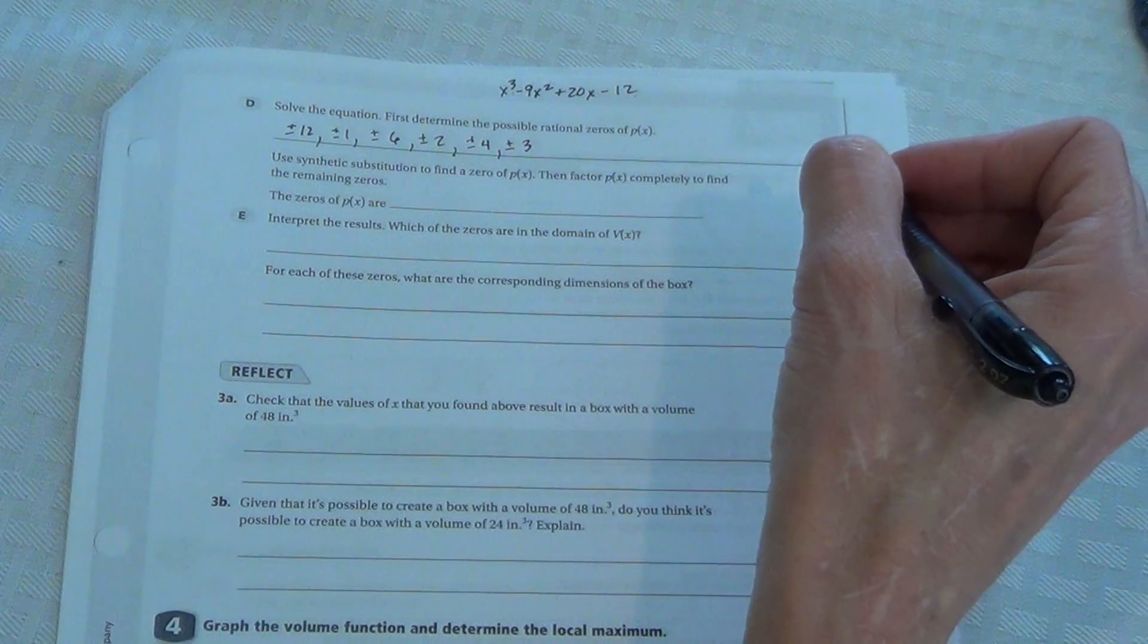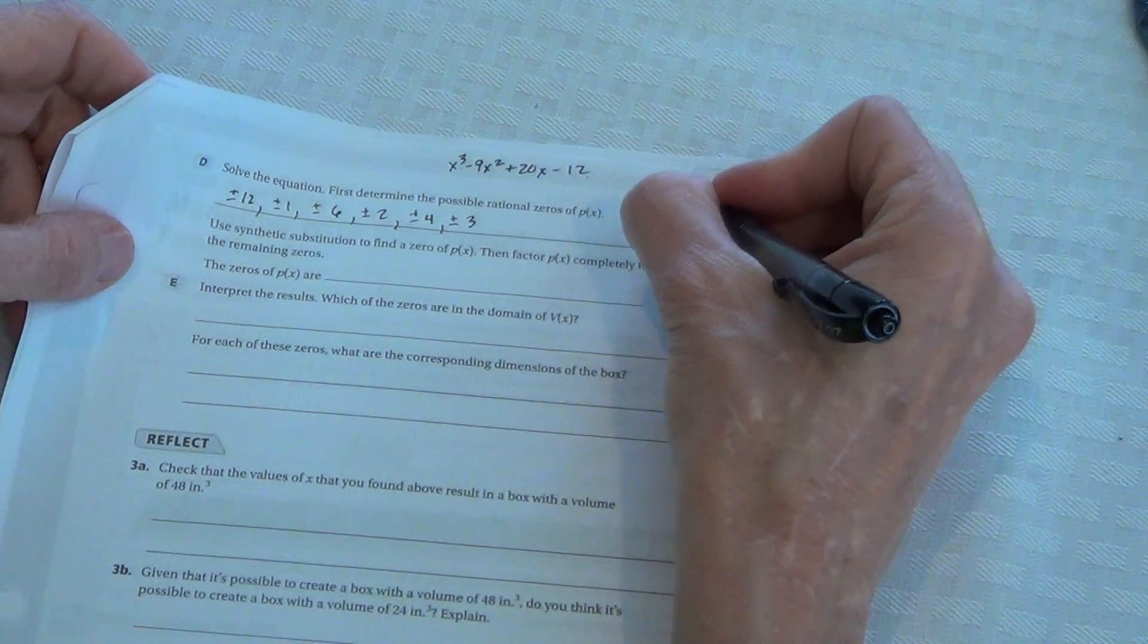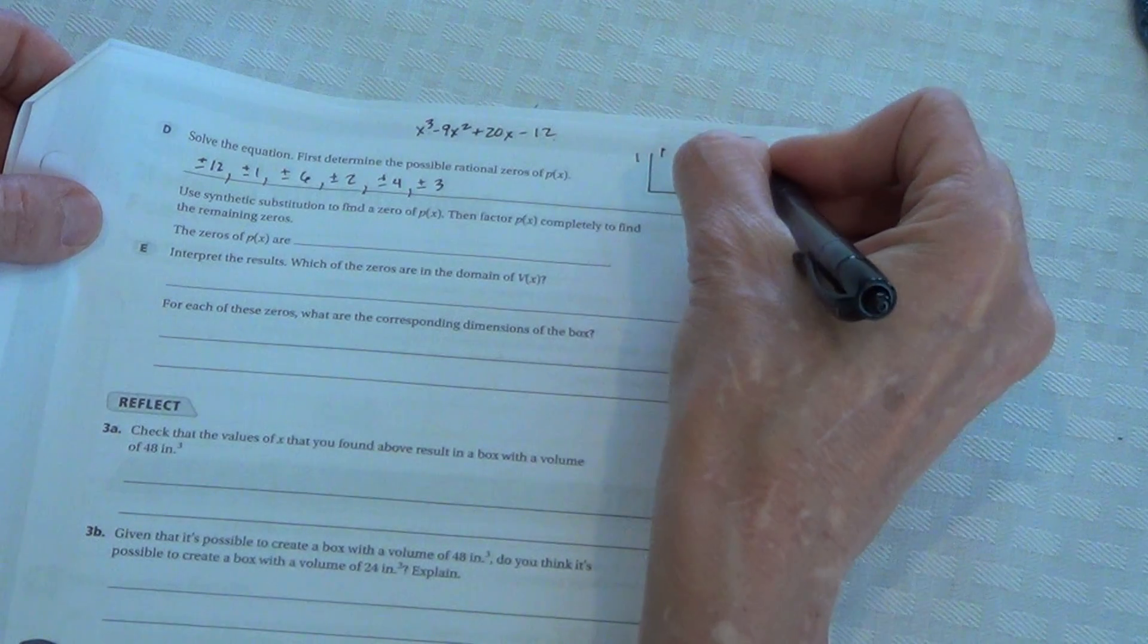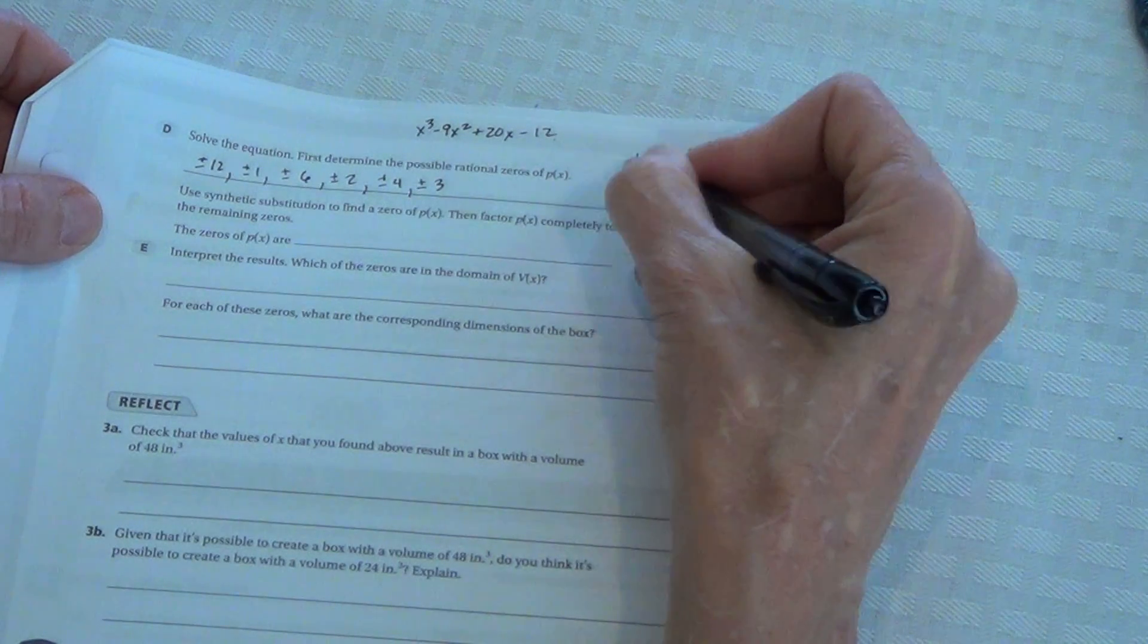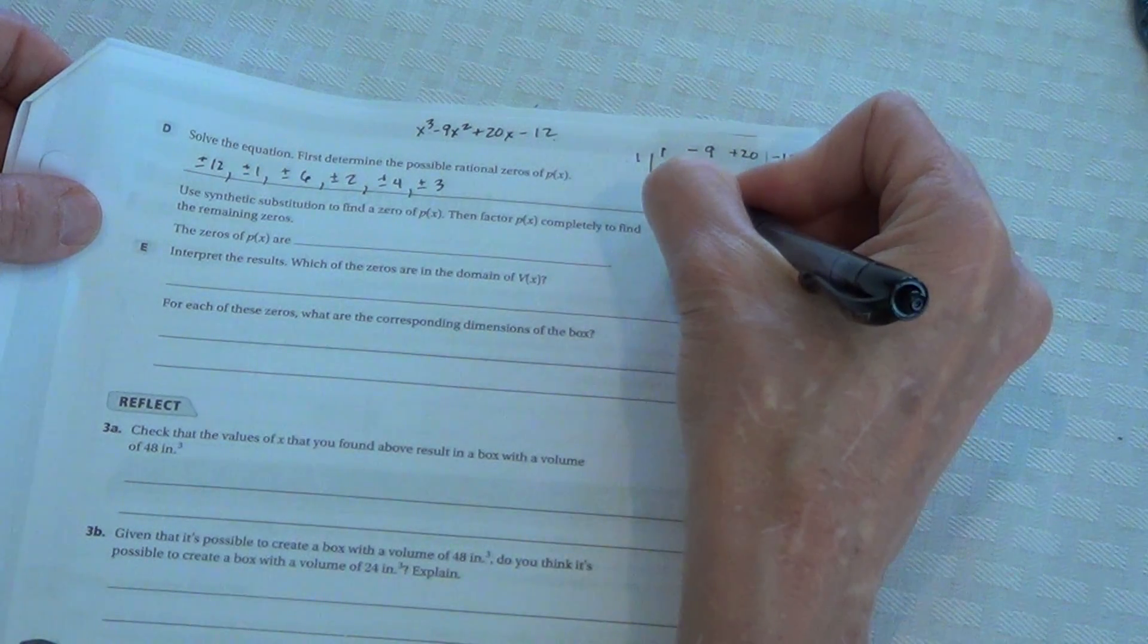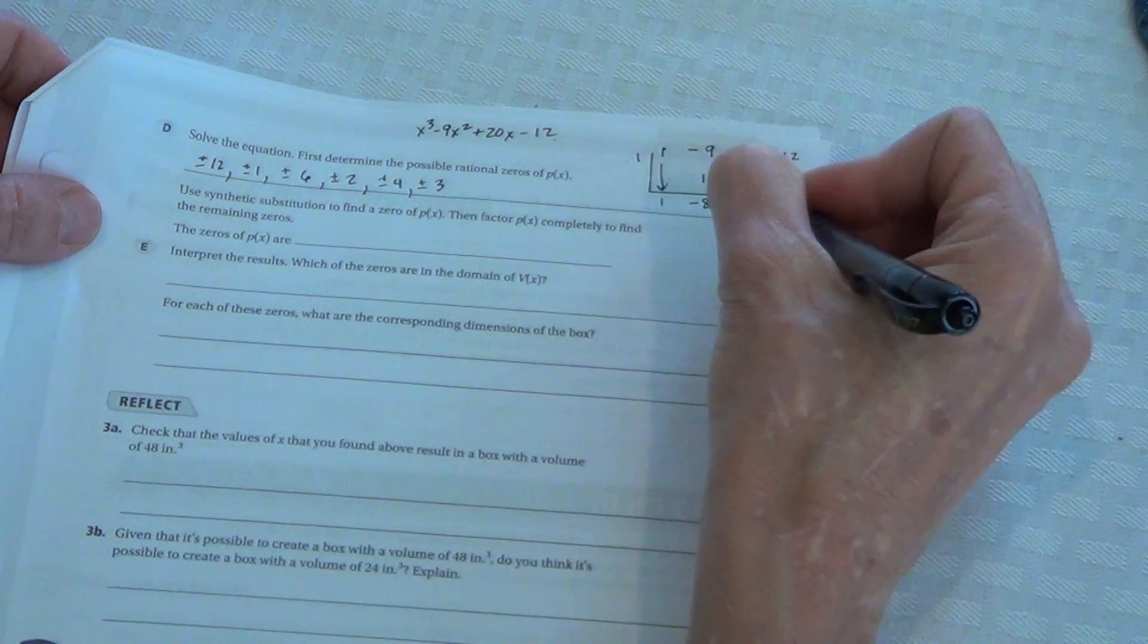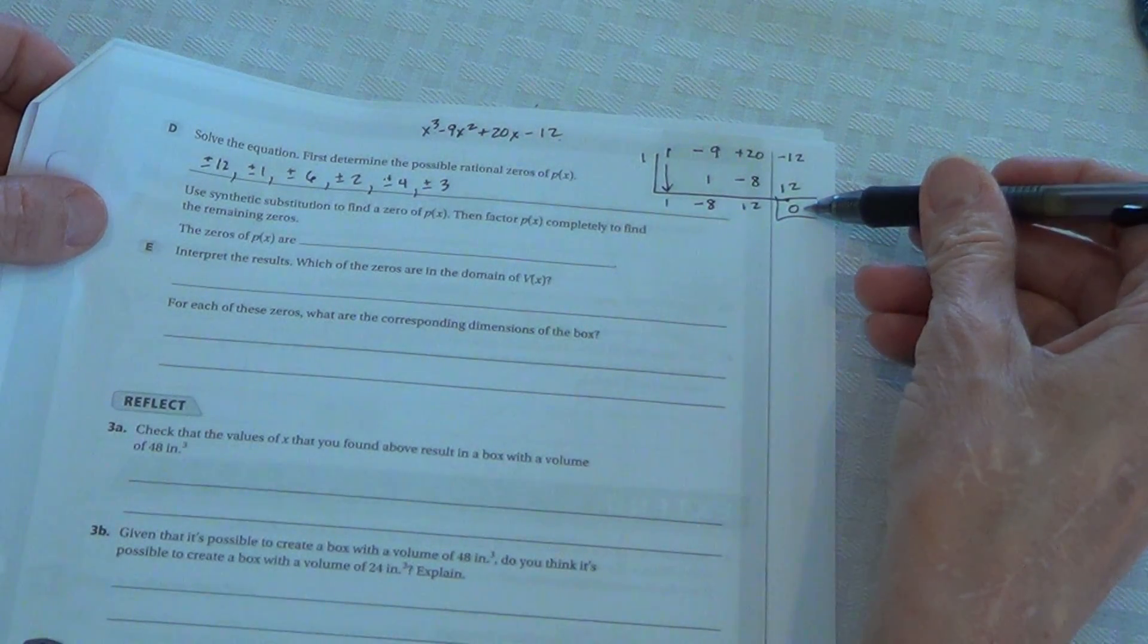Okay. I always start with 1 just to see if it'll by chance divide in there. So use synthetic substitution to find the zero. Just see if we get lucky. If not, then we have to go to each one of them and try. So the coefficient there is 1. Negative 9. Positive 20. Negative 12. Drop that down. 1. 1 times 1 is 1. Negative 9 and positive 1 is negative 8. 1 times negative 8 is negative 8. 20 and negative 8 is 12. 1 times 12. Yay! We are so good. So a zero in our remainder. So we know that 1 is a factor. Or I mean 1 is a zero.